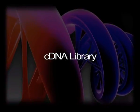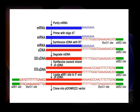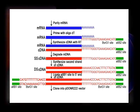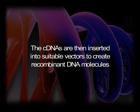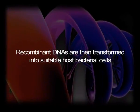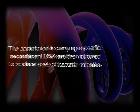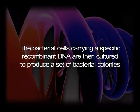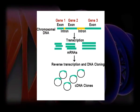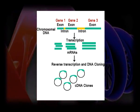A cDNA library represents the expressed part of the genome. The mRNA isolated from a specific tissue or at a specific developmental stage is first converted into complementary DNA (cDNA) with the help of reverse transcriptase. The cDNAs are then inserted into suitable vectors to create recombinant DNA molecules, which are then transformed into suitable host bacterial cells. The bacterial cells carrying a specific recombinant DNA are cultured to produce a set of bacterial colonies, each colony representing a specific gene in the form of a cDNA — thus called a cDNA library.